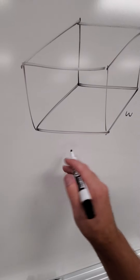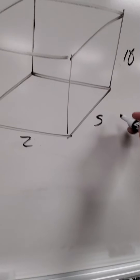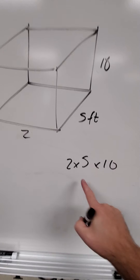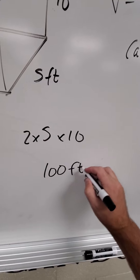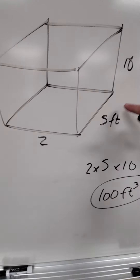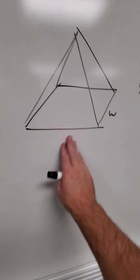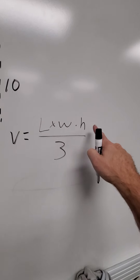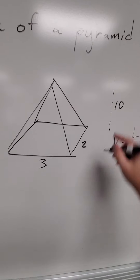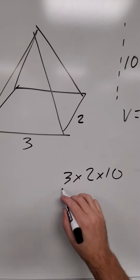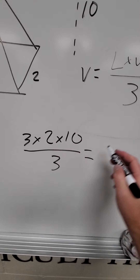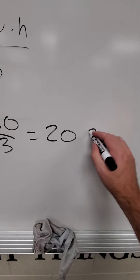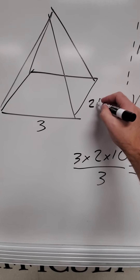Let's do some math. If a cube is two by five by ten feet, then two times five times ten — ten times ten is one hundred cubic feet. That's how you find the volume of a cube with a length of two, width of five, and height of ten. Now for a pyramid with dimensions three by two by ten: length times width times height divided by three — three times two times ten divided by three. Three times two is six, six times ten is sixty, sixty divided by three is twenty. Therefore, that pyramid has a volume of twenty cubic feet.